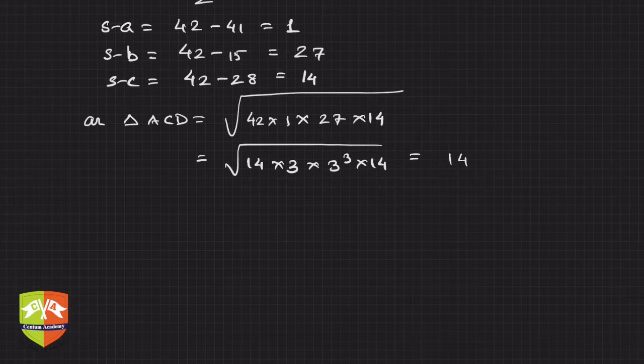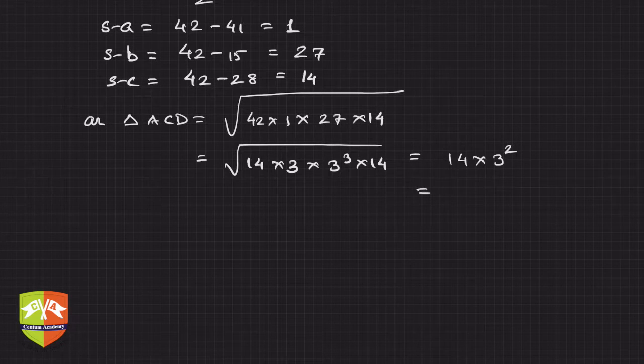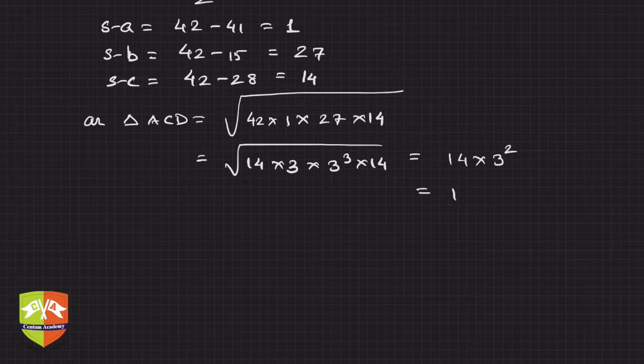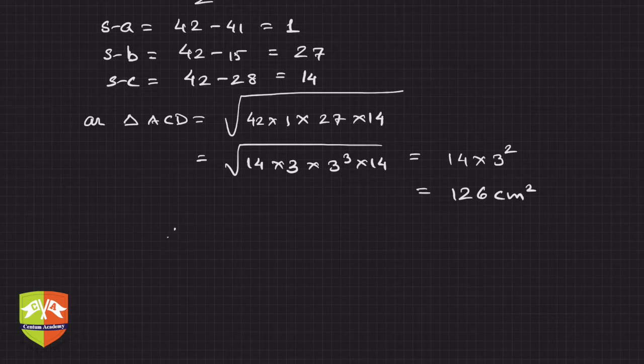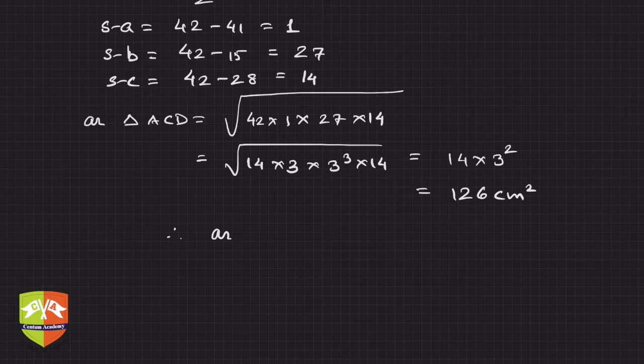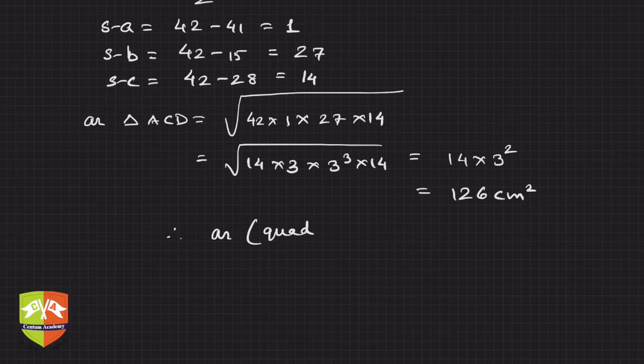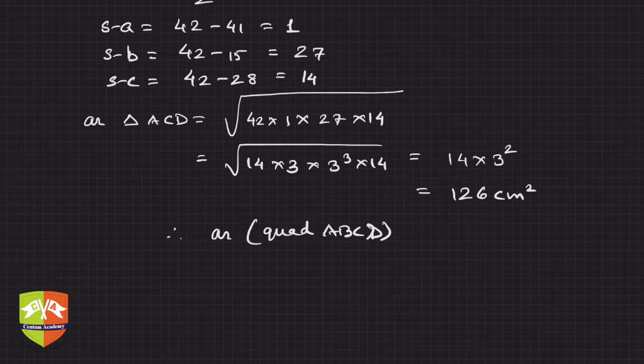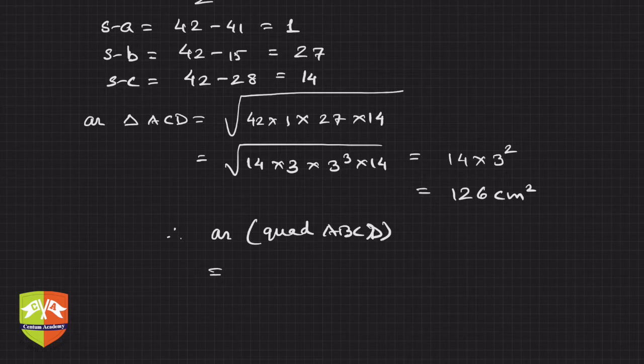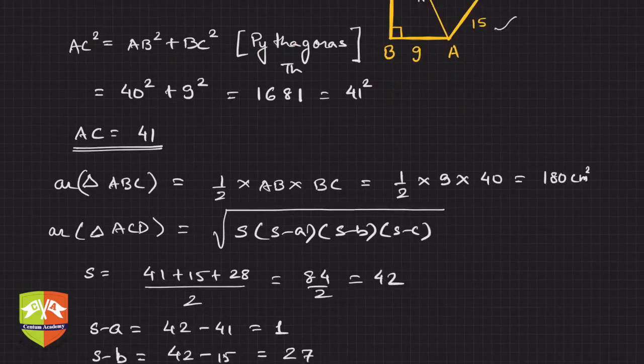Now it's a cakewalk. Area of quadrilateral ABCD equals the sum of the two areas. The first area was 180 centimeter squared, and the second was 126 centimeter squared.